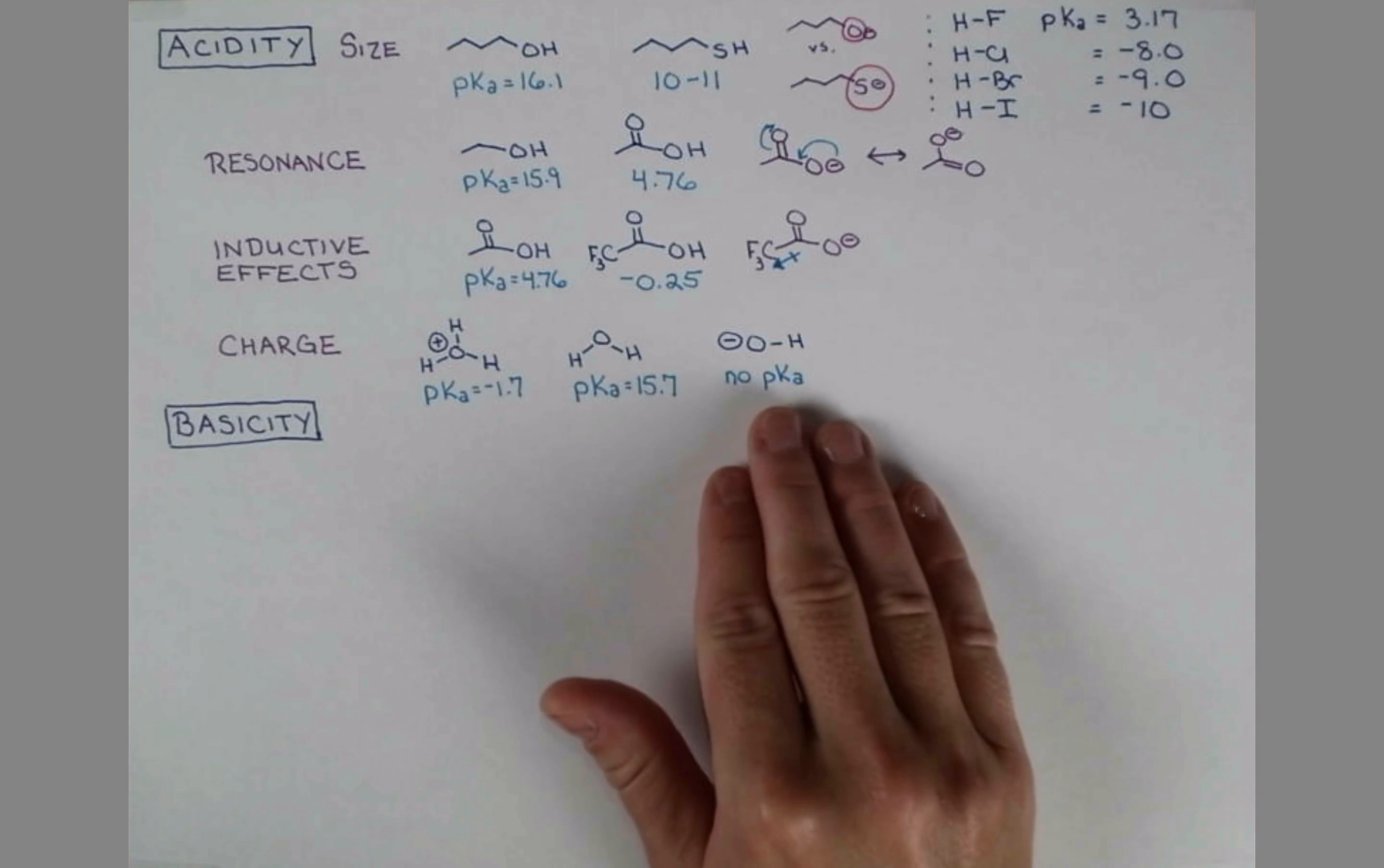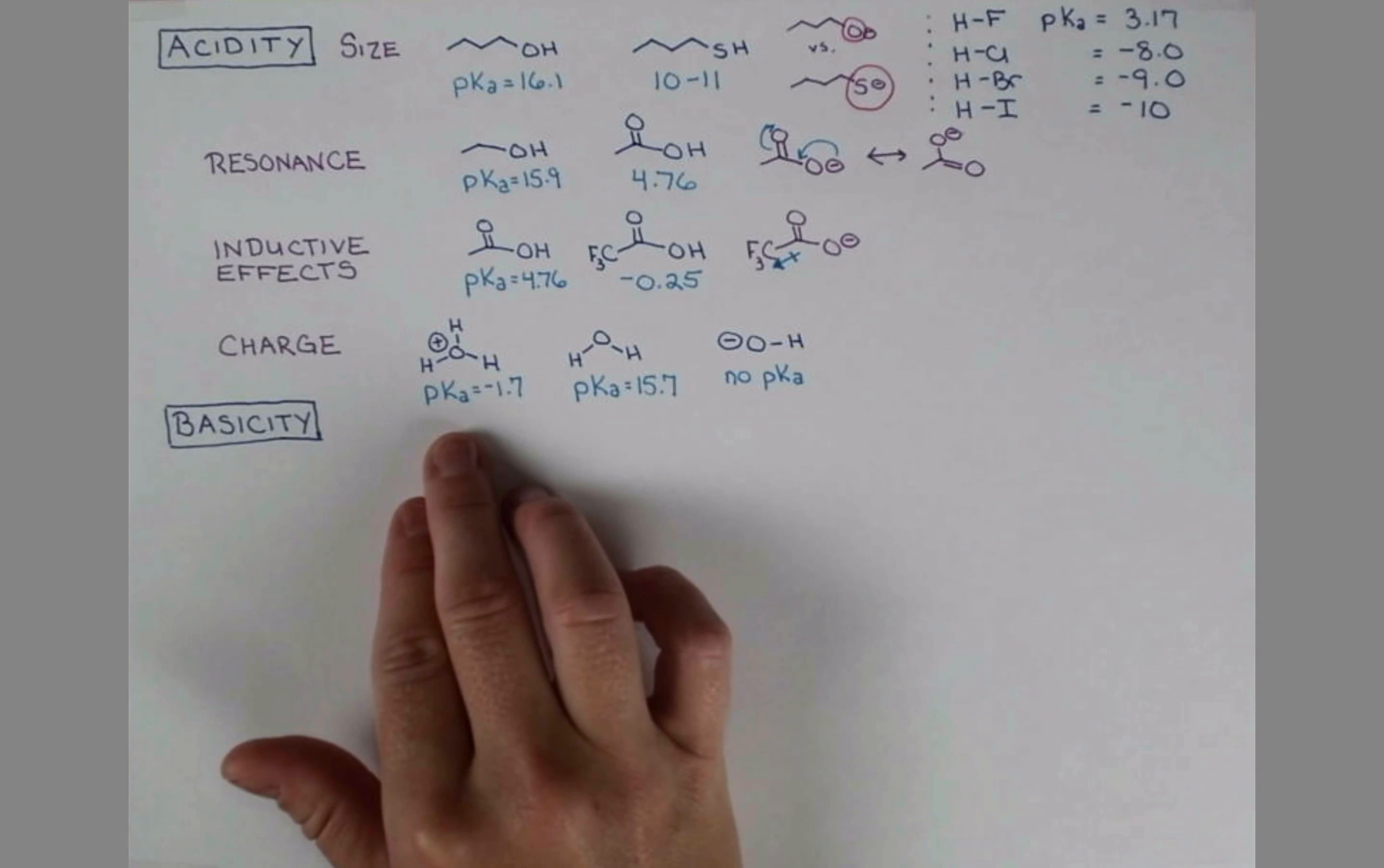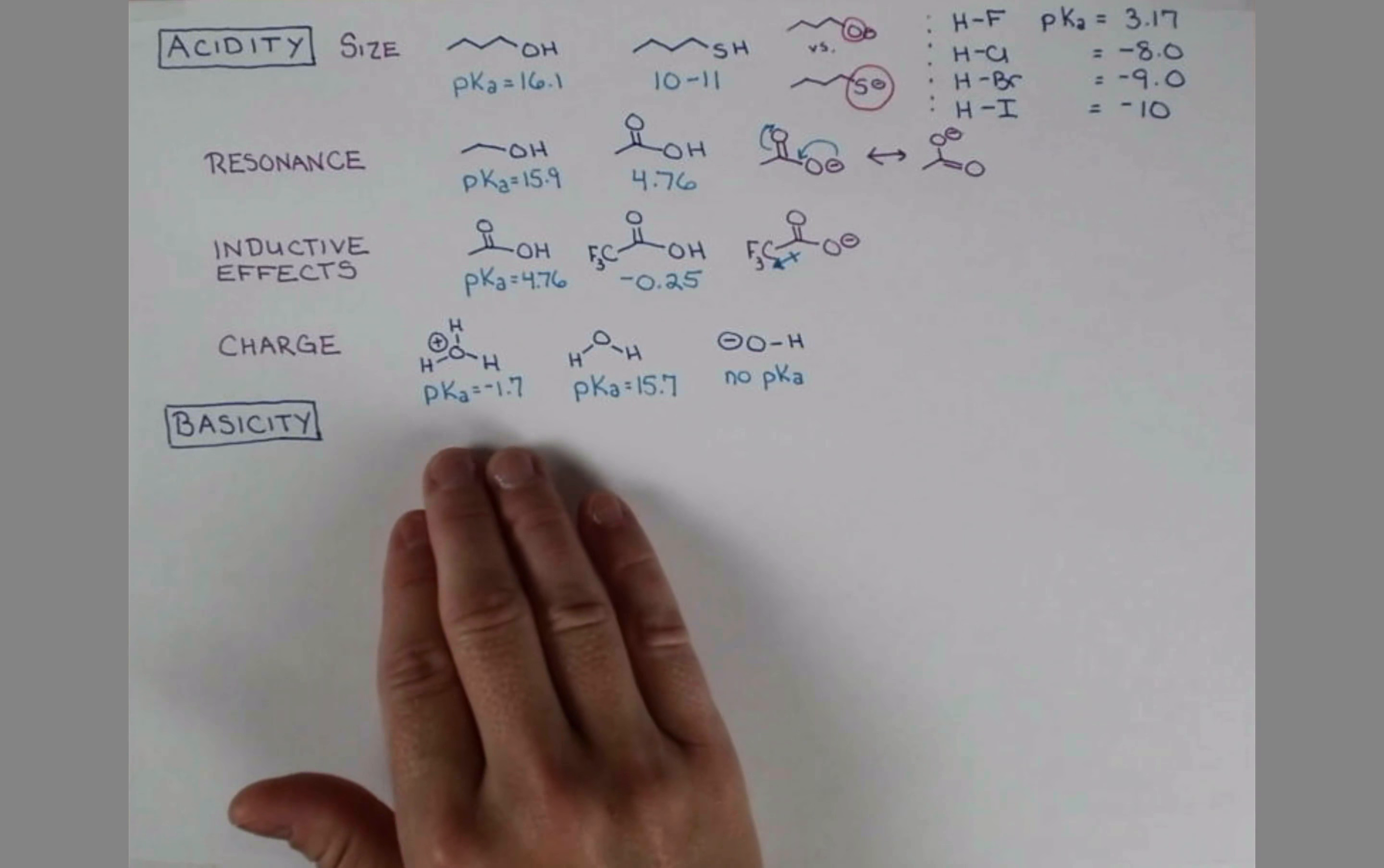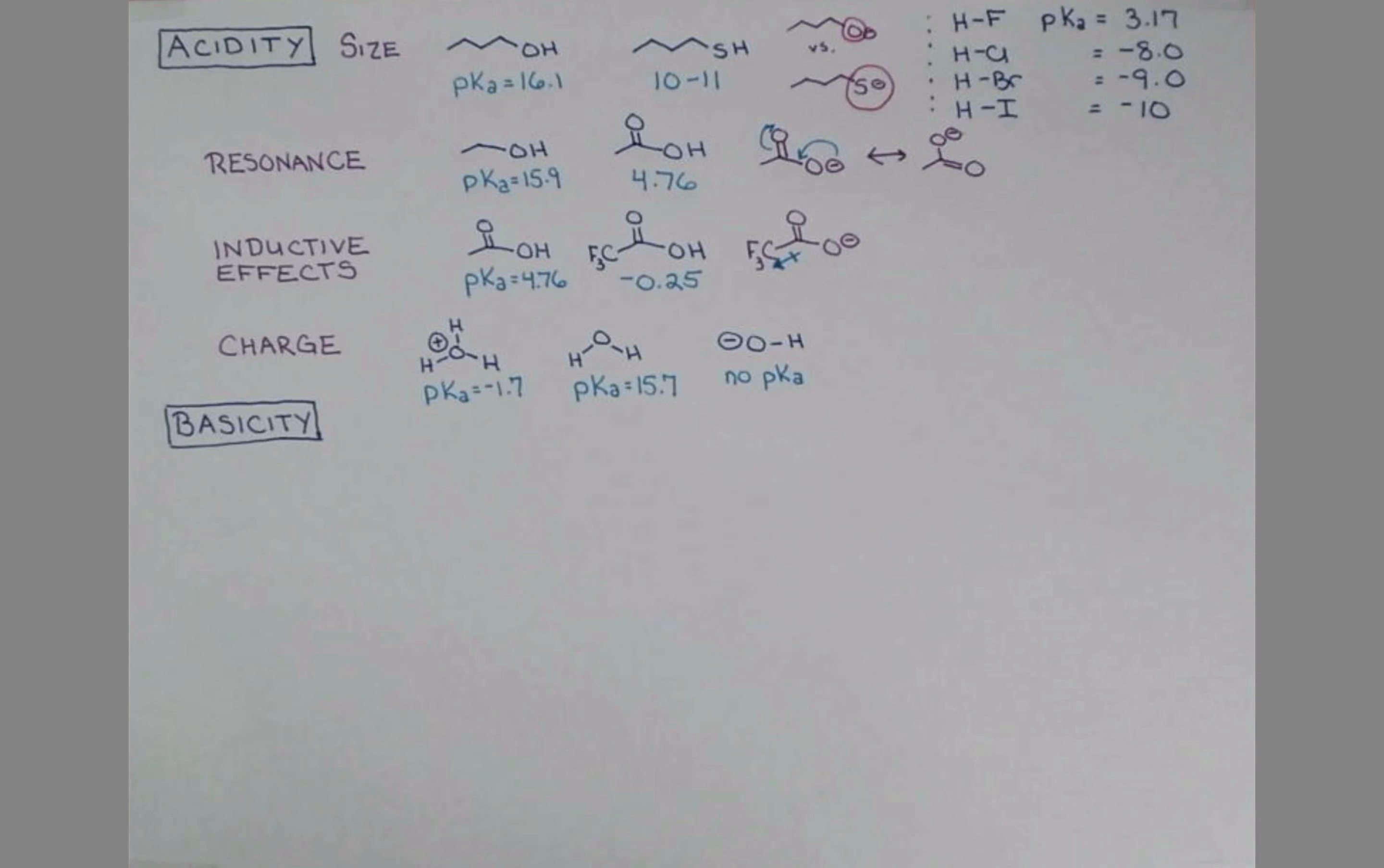But this is a strong base, and we need a way to evaluate basicity of compounds too. So we mentioned hydroxide is a strong base. Water can act as a base, and when it does, it forms the hydronium ion. Now the hydronium ion does have one lone pair on oxygen, but this is not a basic species. In order to accept another proton, it would have to gain a plus 2 charge on this very small molecule, and that's really not going to happen.